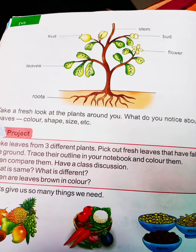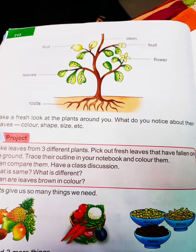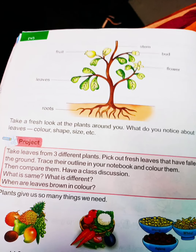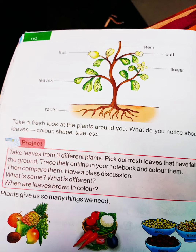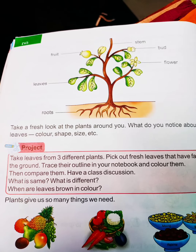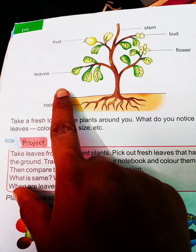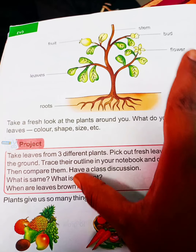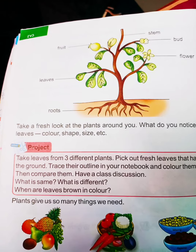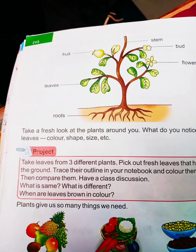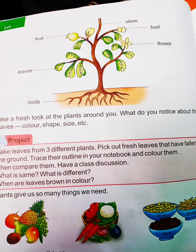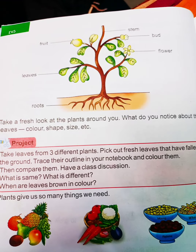A plant has two main parts: the stem and the roots. The stem is above the ground and has leaves, flowers, and fruits. The roots are below the ground. The spellings are: fruit - F-R-U-I-T, leaves - L-E-A-V-E-S, roots - R-O-O-T-S, stem - S-T-E-M, flower - F-L-O-W-E-R.